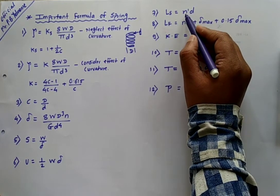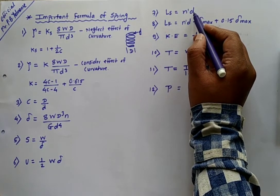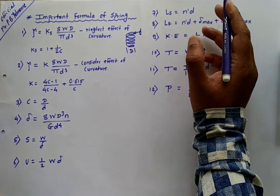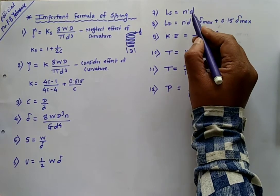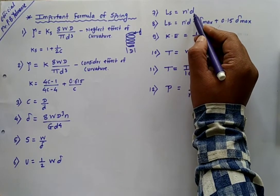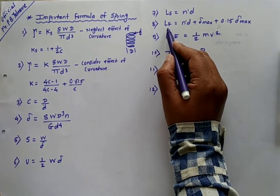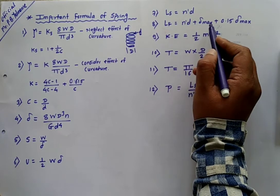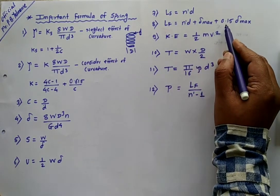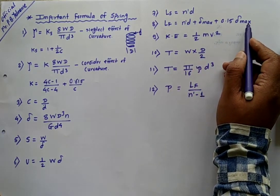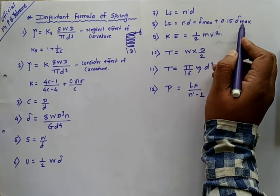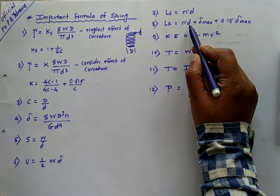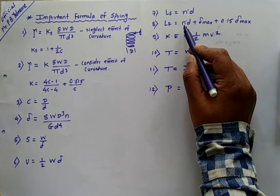The solid length of the spring (Ls) is calculated as Ls = n' × d, where n' is the total number of turns in a helical compression spring and d is the wire diameter. The free length of the spring (Lf) is calculated as: Lf = n'd + delta_max + 1.5 × delta_max, where delta_max is the maximum deflection of the spring.